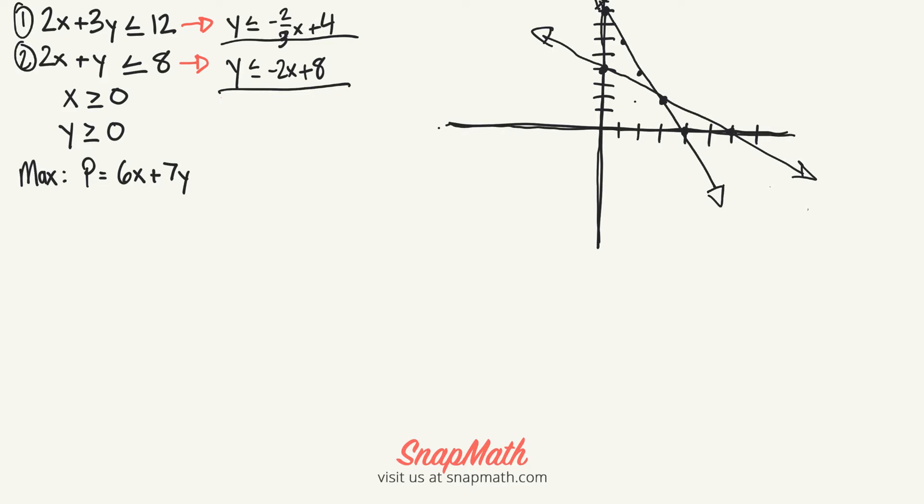We shade below it, we shade below the second line, and we shade to the right of the third line and above the last line. All those will have this common area.